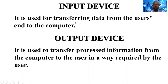Now let's talk about the input device. These are devices used to transfer data from the user — from the real world — to the computer system. Examples include the keyboard, the mouse, the camera, the scanner, the joystick, the microphone, the optical marker recognition, and barcode readers.